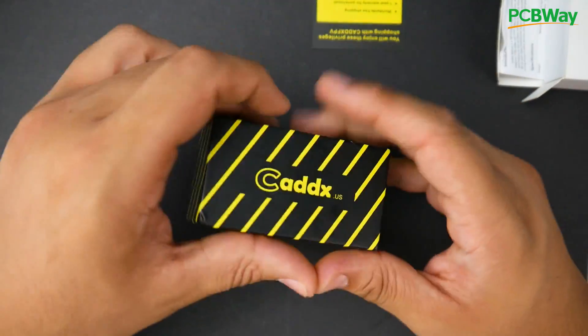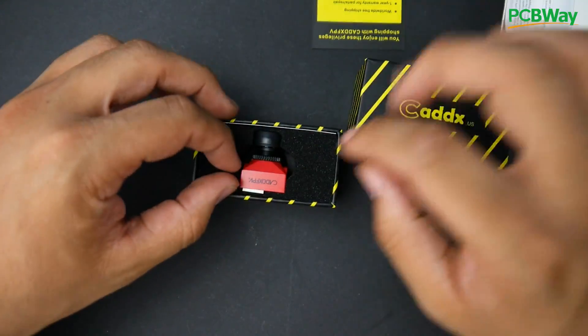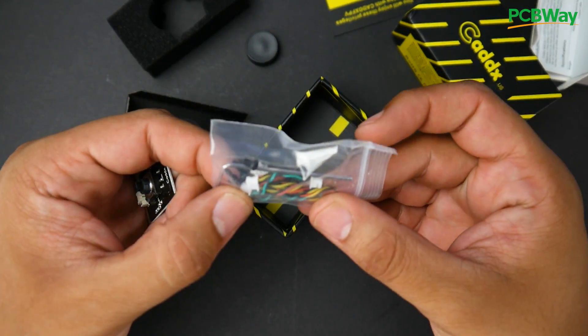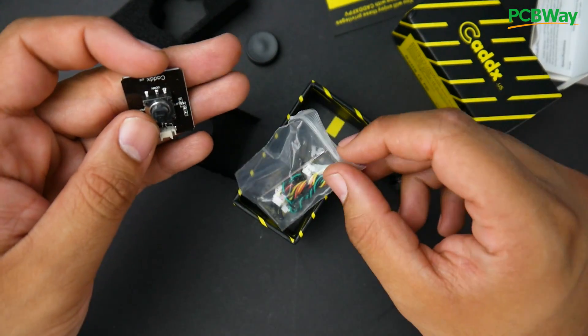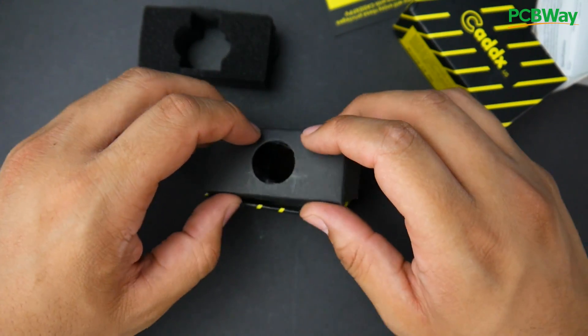Now we have one more camera here, which is the Caddx Ratel Mini. So let's go ahead and pop this guy open. It's a pretty big guy actually. So you get the remote, you get the tool, you get two wires and you get some screws, which is plenty enough here. Now let's go ahead and discuss its overall latency.